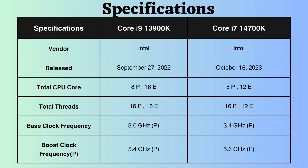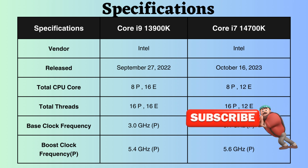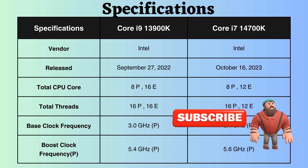The Core i7-14700K was released approximately one year after the release of the Core i9-13900K. The Intel Core i9-13900K features 8 performance cores and 16 efficiency cores, whereas the Core i7-14700K has 8 performance cores and 12 efficiency cores. Having more cores and threads can lead to improved multitasking performance, faster processing of multi-threaded workloads, and better utilization of hardware resources. Additionally, the Core i9 has more threads than the Core i7-14700K.